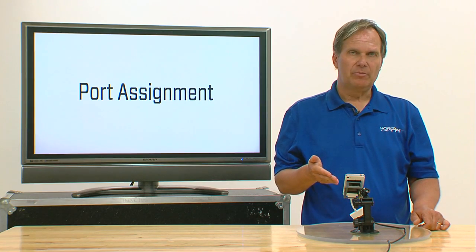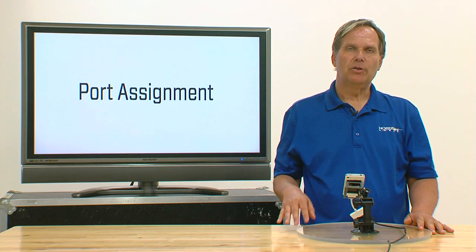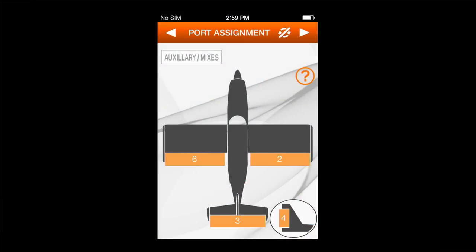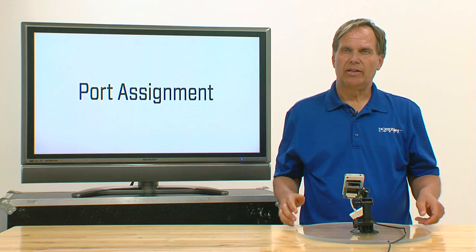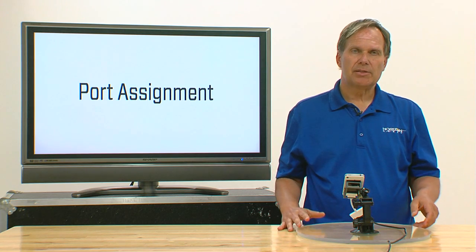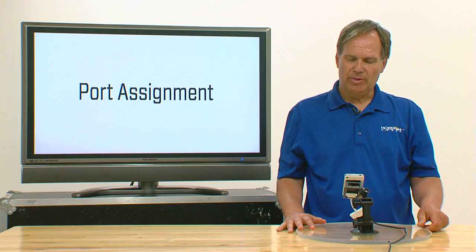The entire purpose of the port assignment screen, the first time you go through the wizard, is simply a reference to allow you easy access to know where to plug in your particular servos. In this case, the right aileron is labeled number 2 and goes into port 2, the left aileron goes into port 6, the elevator goes into port 3, and the rudder goes into port 4. This is very simple because it's a very basic airplane, but for airplanes with flaps or multiple tail types, this screen will tell you exactly where to plug those servos. It makes it very simple.